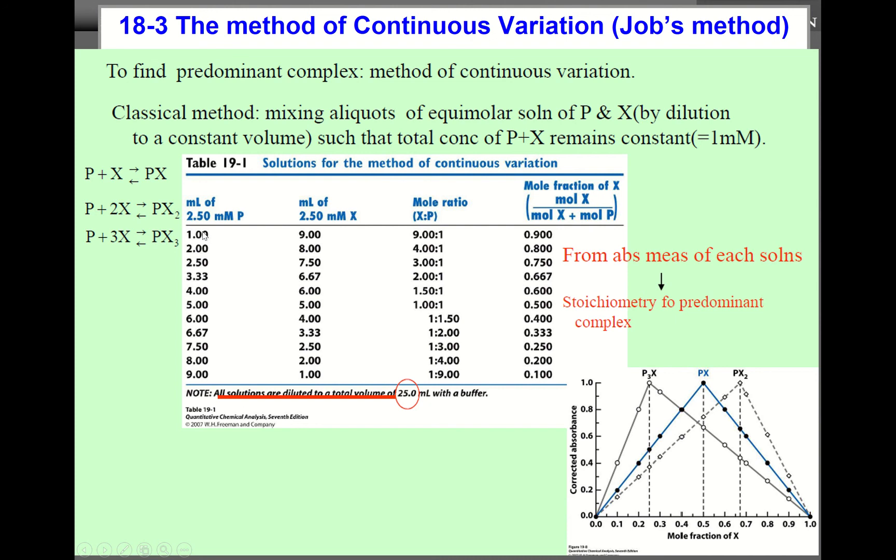Here, the first column is, let's say total volume is the same, and the first column is the volume of P and second column is volume of X. You see, the volume of P and X is all the time 10. All the time 10.